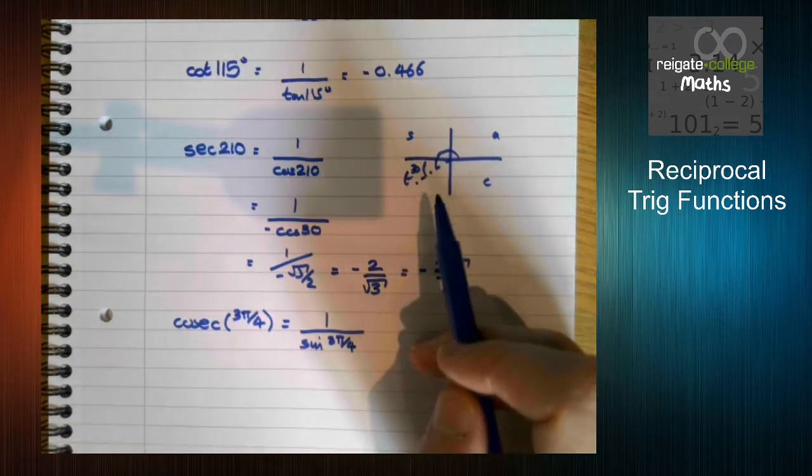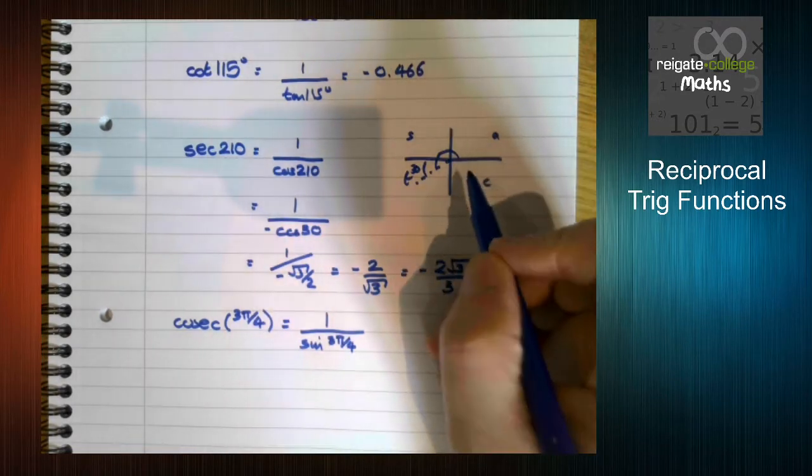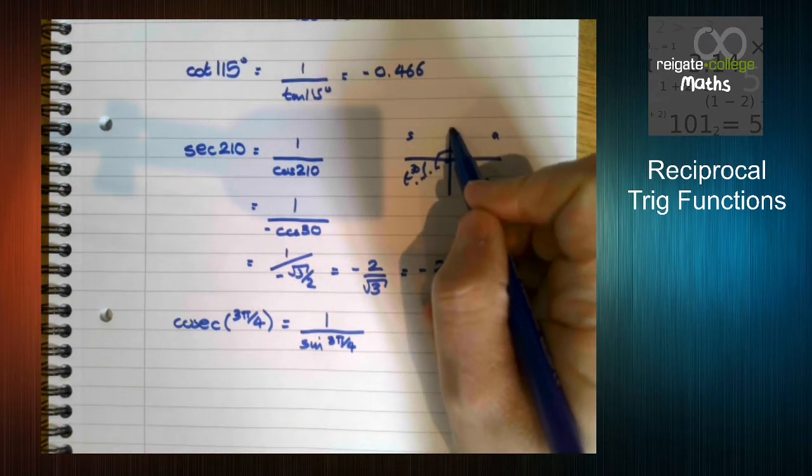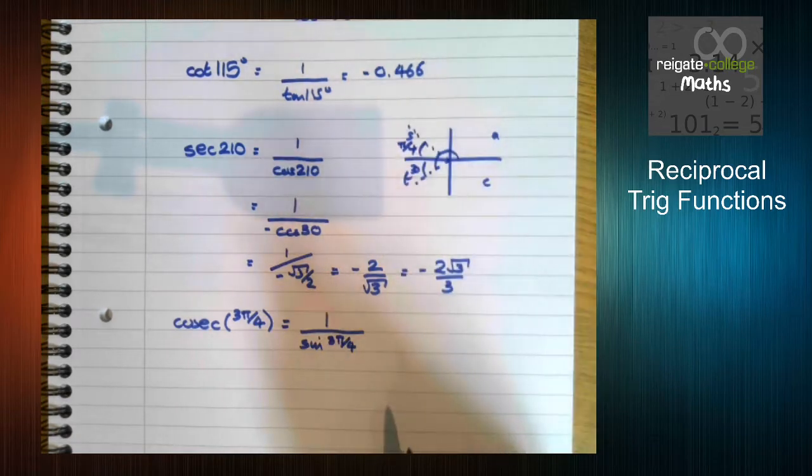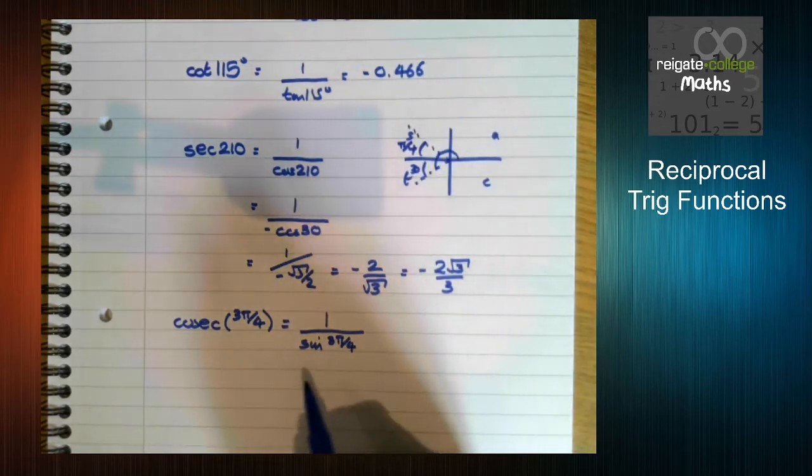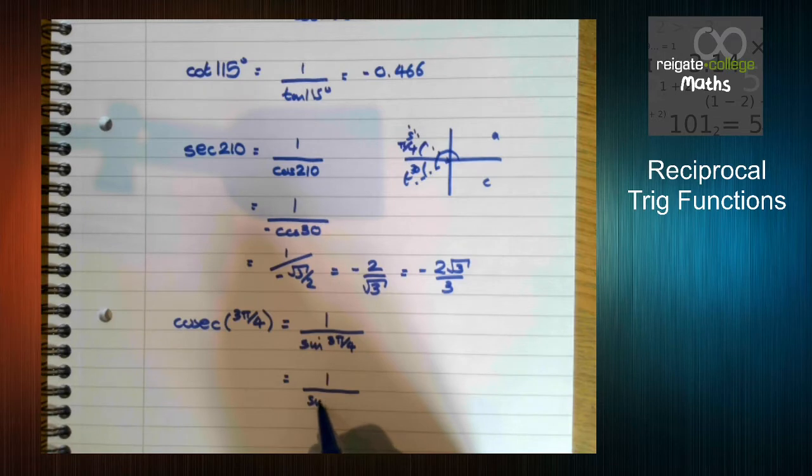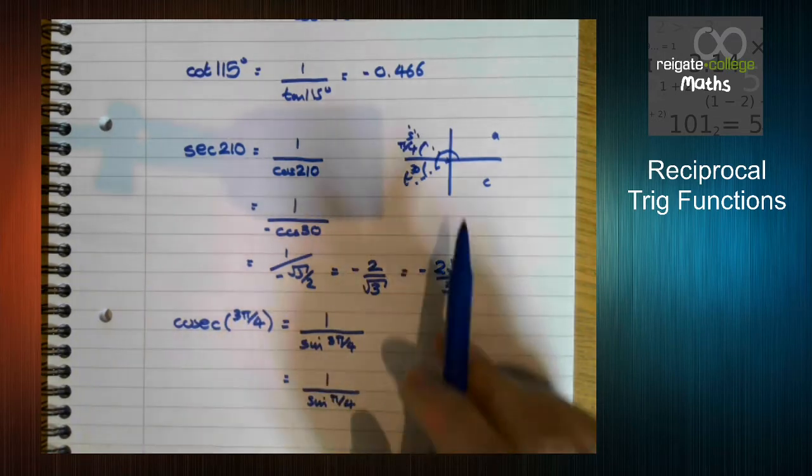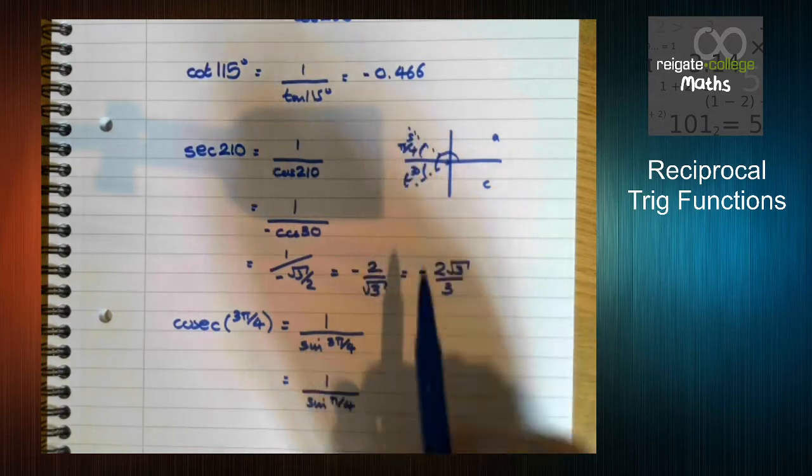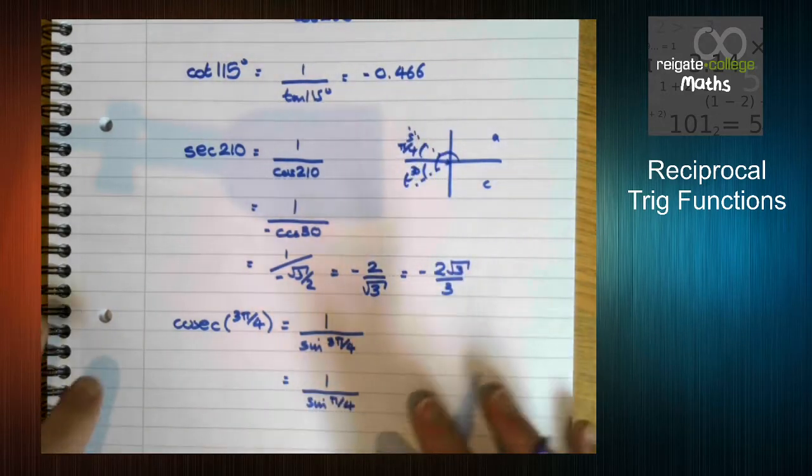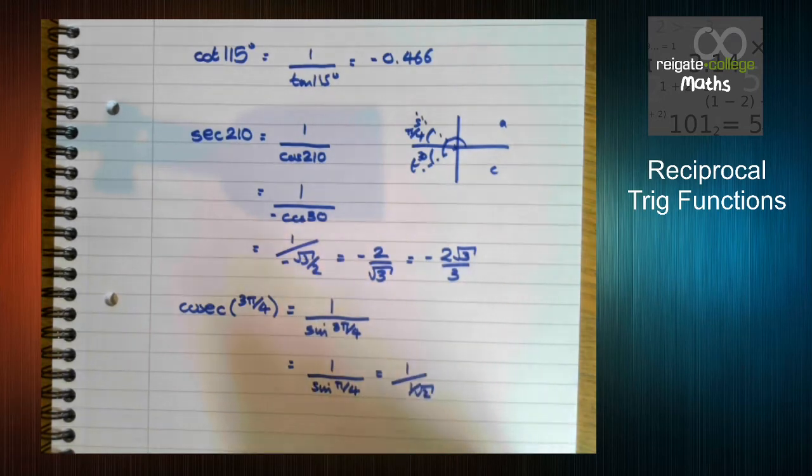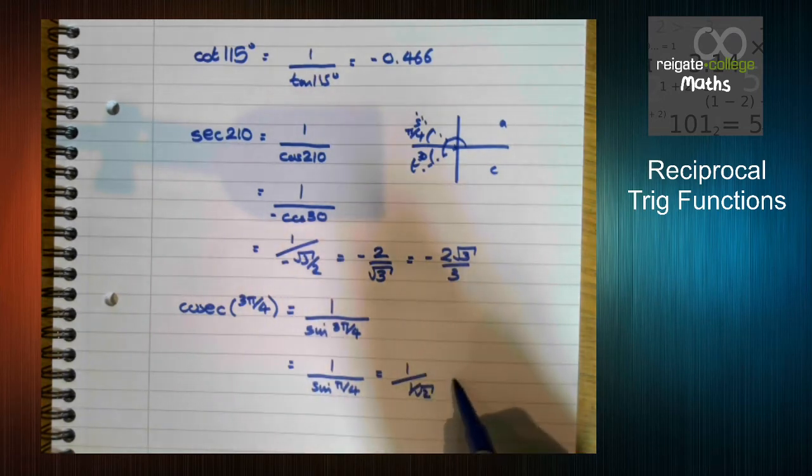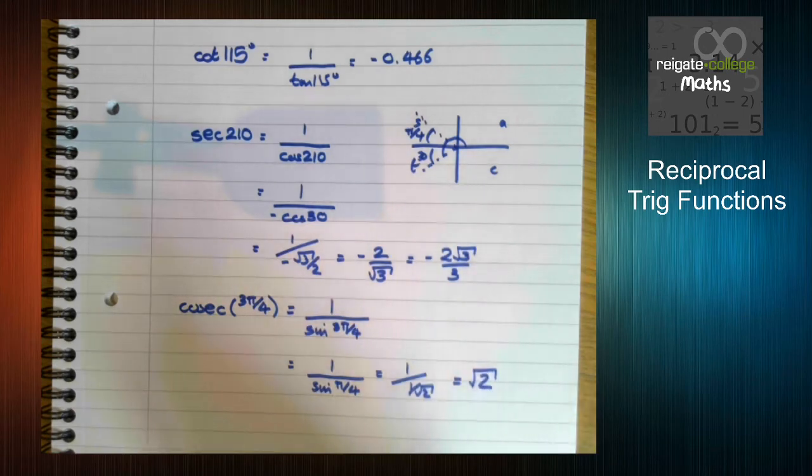Going back to our diagram, 3π over 4 is between π over 2 and π, so it puts us somewhere in here, with this acute angle being π over 4. So this is the same, it's 1 over sin π over 4, positive because it's in the s quadrant. Sine π over 4, hopefully you all know, is 1 over root 2, or root 2 over 2. But writing it as 1 over root 2 helps in this instance, because this just comes out as root 2.